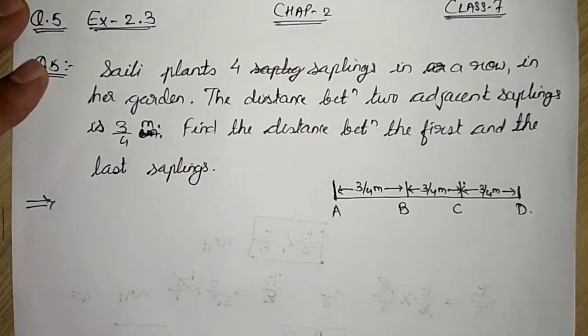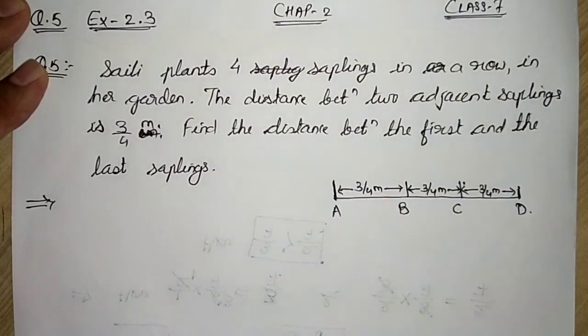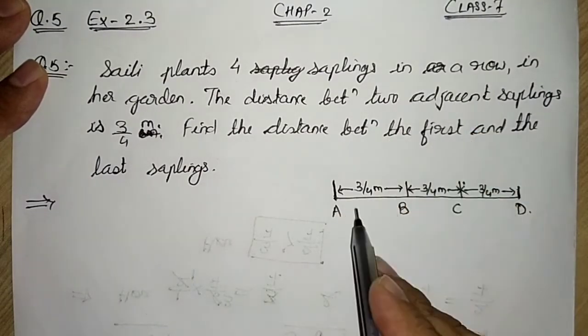Saili is one girl who plants four saplings. Sapling means the young tree which we grow in our garden. She plants in a row like this.